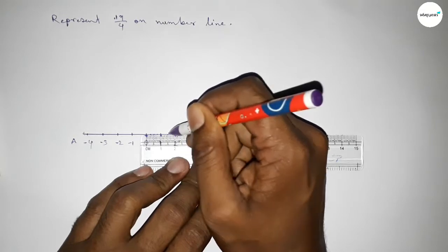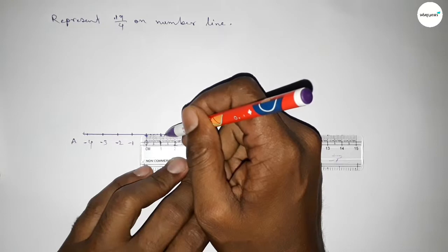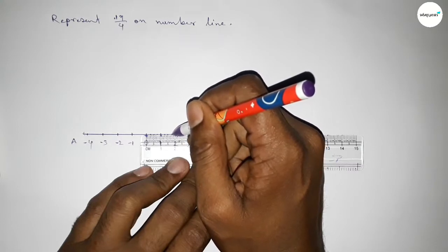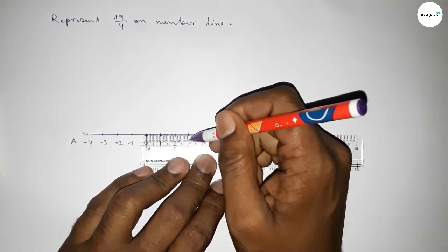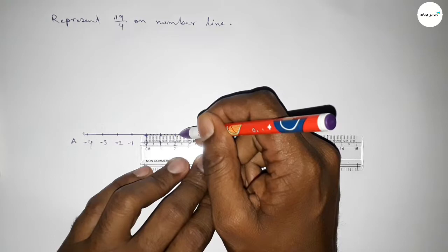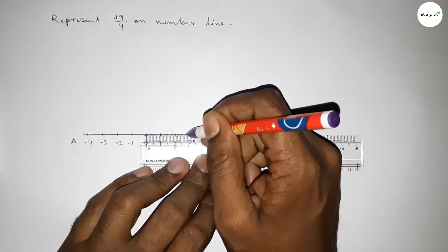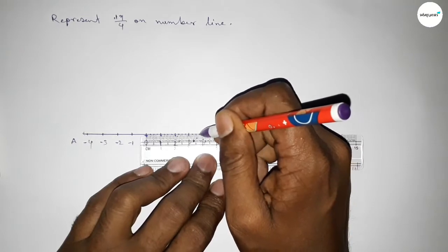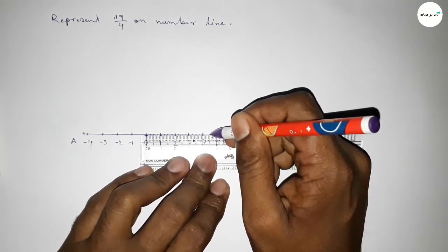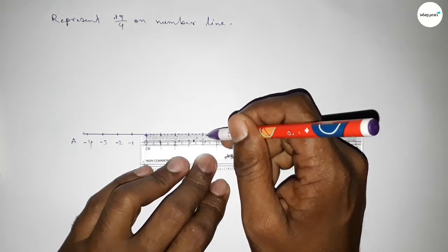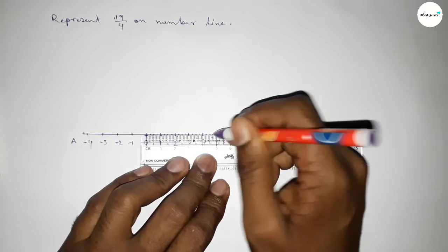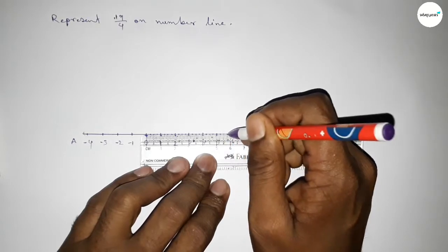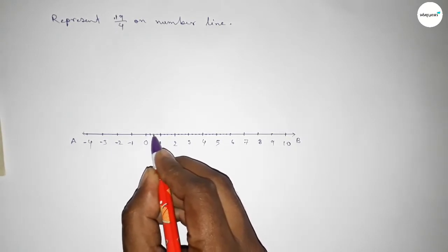Taking the half, then the half between 1.5 to 2 — this is approximately 1.75. Now again dividing the distance between 2 to 3, taking the half, then the quarter marks. By this way we can divide the distance between any two numbers into 4 equal parts: first divide into two equal parts, then divide again into four equal parts.